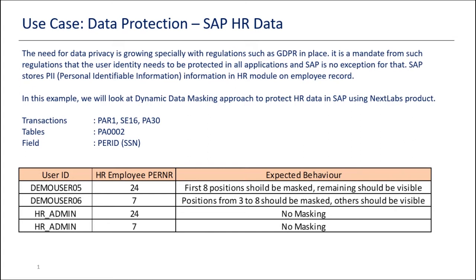In one scenario, we'll see how to mask certain characters in the SSN. Out of 10 digits in SSN, we would mask the first eight digits and leave the two digits at the end open. In a second scenario, we'll look at masking somewhere in between — skipping two digits in the front and two digits at the end, and masking everything in between. This is just to demonstrate that dynamic data masking functionality can be used in different ways based on the need.